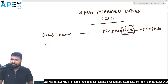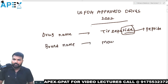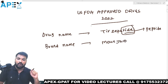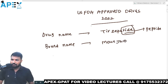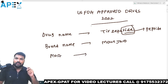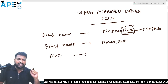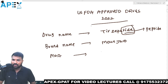The brand name of this drug is Mounjaro. Coming to the mechanism of action, Tirzepatide is a GLP-1 agonist.